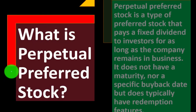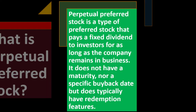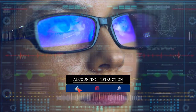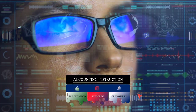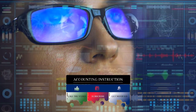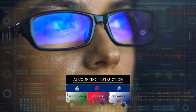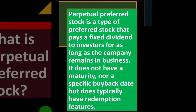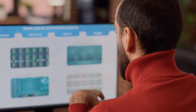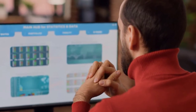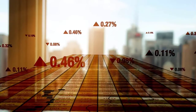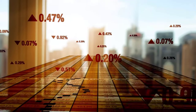What is perpetual preferred stock? Perpetual preferred stock is a type of preferred stock that pays a fixed dividend to investors for as long as the company remains in business. It does not have a maturity date nor a specific payback date, but does typically have redemption features. The dividend payments are structured more like a fixed income type of payment, with less flexibility for the corporation to decide whether or not to pay them, compared to common stock dividends.